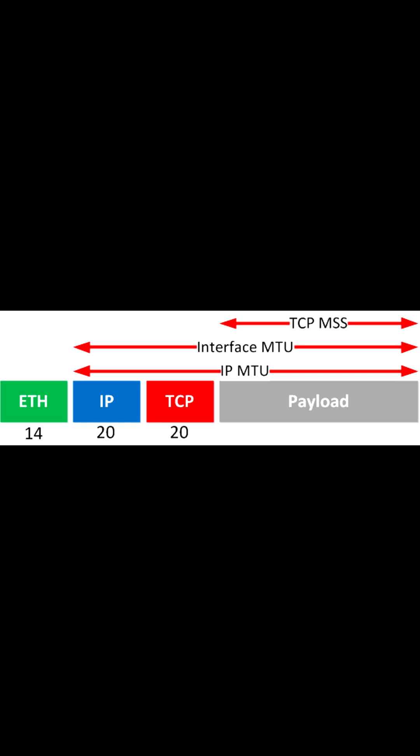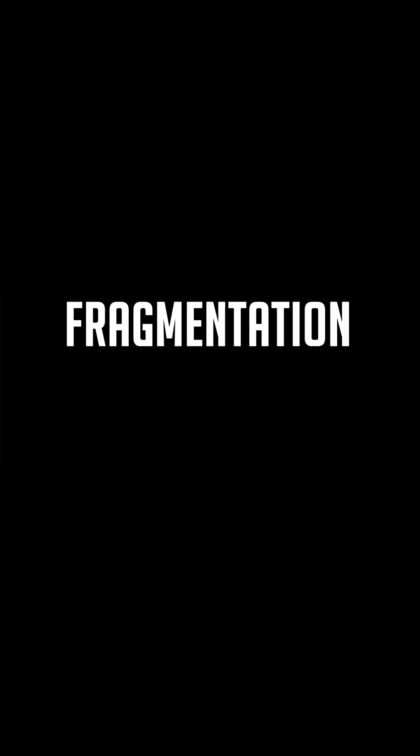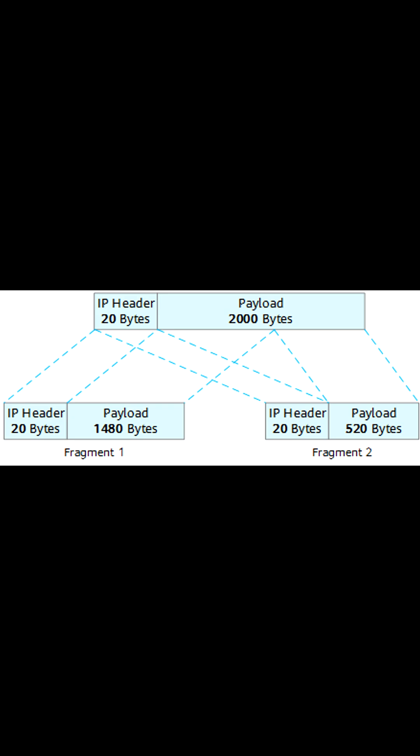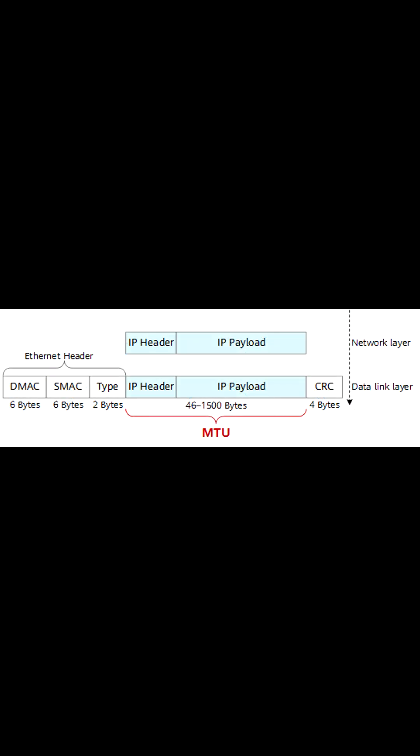Increasing the Layer 2 MTU can help to reduce fragmentation and improve network performance by allowing larger packets to be transmitted across the network. However, it's important to note that increasing the MTU can also have implications for network performance and stability, as well as interoperability with other devices on the network.